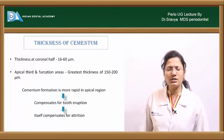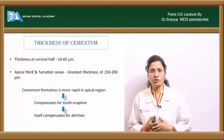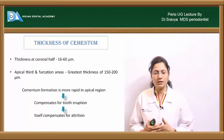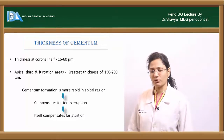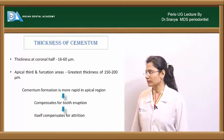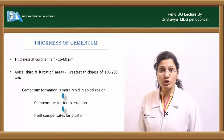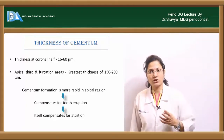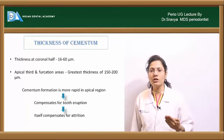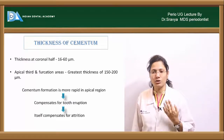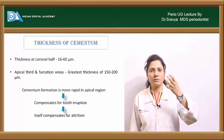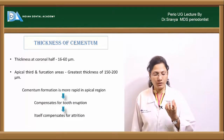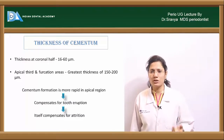The thickness of cementum varies by region. In the coronal portion it is about 16–60 micrometers; toward the middle third and apical portion it is thicker at 150–200 micrometers. Cementum formation is more rapid at the apical portion because of passive eruption — as attrition occurs with age, the tooth passively erupts to maintain interocclusal height, requiring more cellular cementum at the apex.